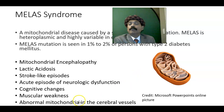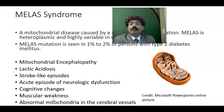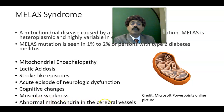Mitochondria produces ATP, so muscular activity depends on mitochondria. Abnormal mitochondria, including abnormal mitochondria in the cerebral vessels, can result in abnormal cellular function.